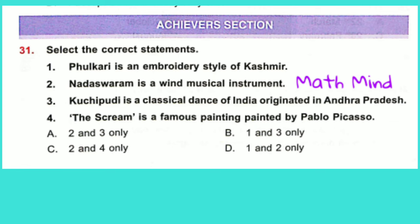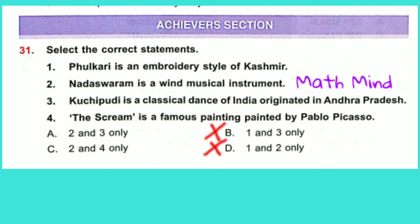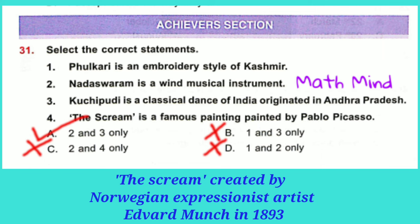Hachitbhar Section. Question No. 31: Select the correct statements. Statement 1: Phulkari is an embroidery style of Kashmir — this is incorrect. Phulkari refers to the folk embroidery of Punjab. Statement 2: Nadaswaram is a wind musical instrument — this is correct. Statement 3: Kuchipudi is a classical dance of India originated in Andhra Pradesh — this is correct. Statement 4: The Scream is a famous painting painted by Pablo Picasso — this is an incorrect statement.